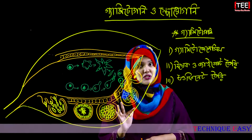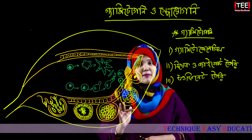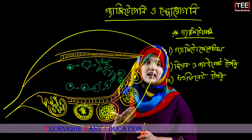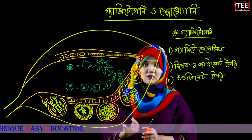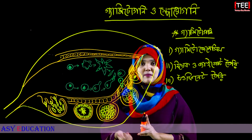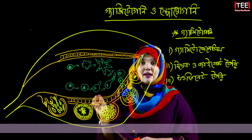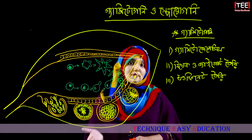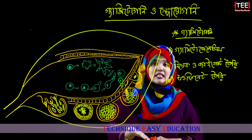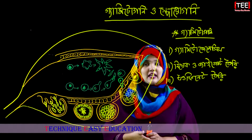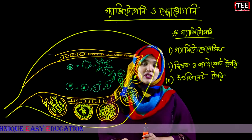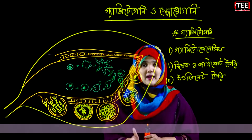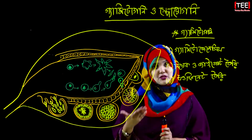Spermatogenesis is the genesis of the male gamete. The micro gametocyte is called the micro gamete. In that genesis, the micro gametocyte is called a tri-general form.